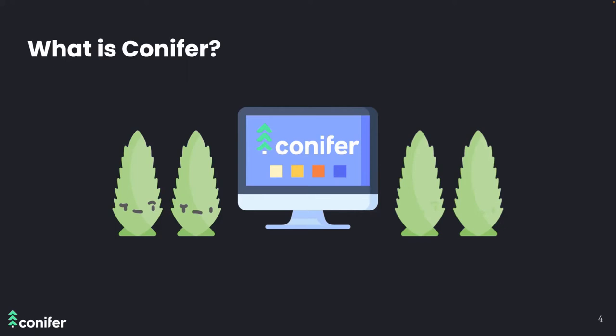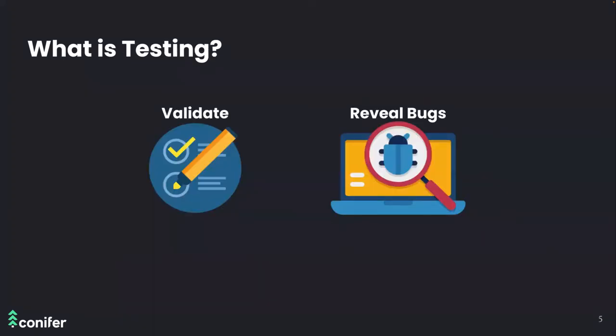To appreciate what Conifer does, we have to understand some basic ideas on how testing works. What is testing? Testing is the process of evaluating and validating whether an application is functioning as designed and meets the requirements. Testing also helps reveal any bugs in the application that can then be fixed accordingly.